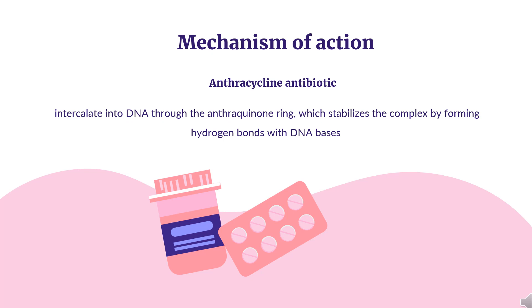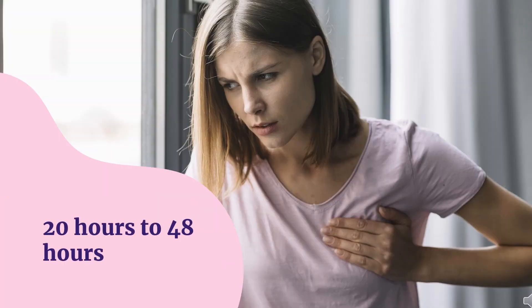Doxorubicin can be metabolized by microsomal NADPH cytochrome P450 reductase into a semiquinone radical, which can be reoxidized in the presence of oxygen to form oxygen radicals. The terminal half-life of doxorubicin ranges from 20 hours to 48 hours.